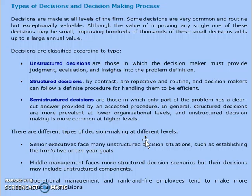Decisions are made at all levels of the firm. Some decisions are very common and routine but exceptionally valuable. Although the value of improving any single one of these decisions may be small, improving hundreds of thousands of these small decisions adds up to a large annual value. In the organization, there are various levels and in each level, decisions have to be taken. Every level exists with some problems, and to resolve these problems, appropriate decisions have to be taken.